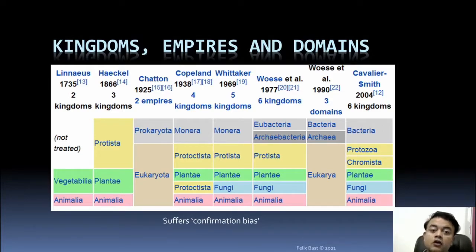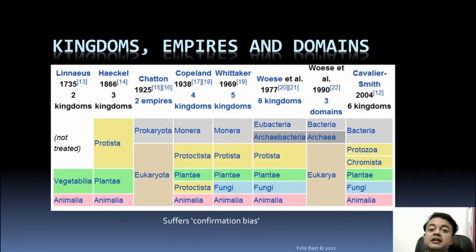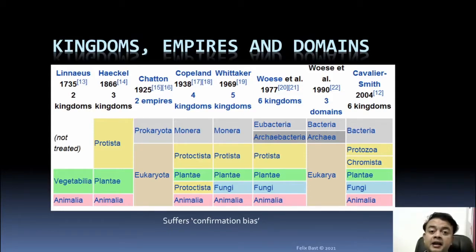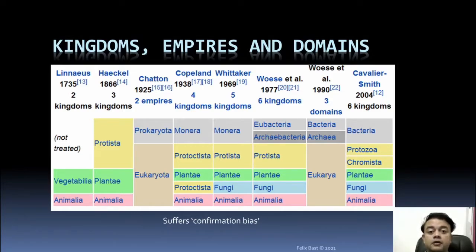In 2004, Cavalier-Smith from Oxford erected a six-kingdom classification: Bacteria, Protozoa, Chromista — he added a new kingdom Chromista — Plantae, Fungi, and Animalia. Basically what he did is divide Protista into two major kingdoms, Protozoa and Chromista, and he also combined Bacteria and Archaea into just one kingdom, Bacteria.